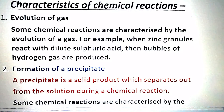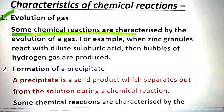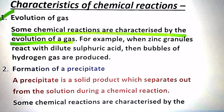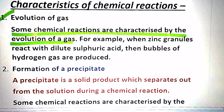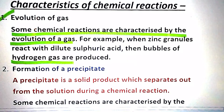The first characteristic of a chemical reaction is Evolution of Gas. Some chemical reactions are characterized by the evolution of a gas. For example, when zinc granules react with dilute sulfuric acid, then bubbles of hydrogen gas are produced.